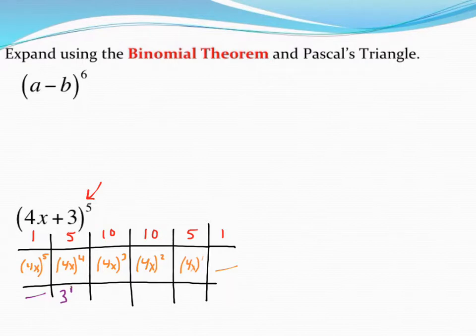I don't need parentheses because it's just a positive 3, and then 3 squared, 3 to the third, 3 to the fourth, and finally 3 to the fifth.